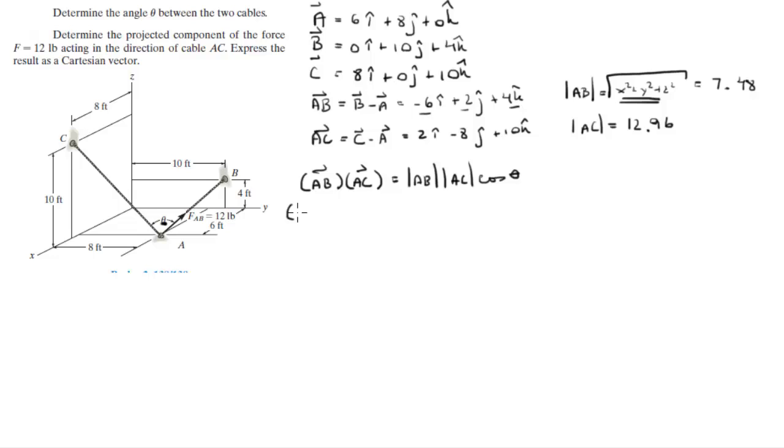So negative 6i plus 2j plus 4k dot 2i minus 8j plus 10k is equal to...